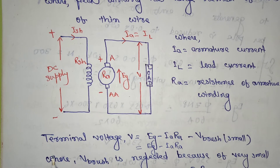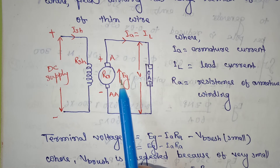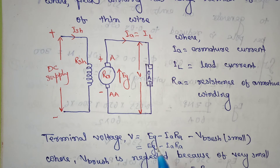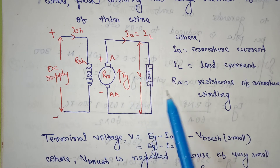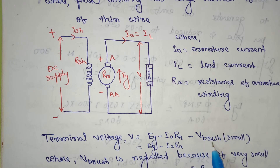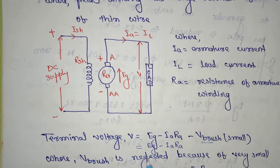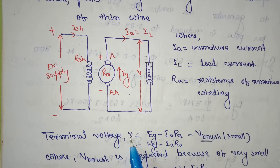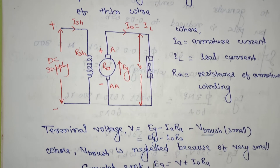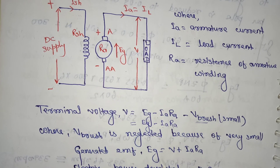Now let us see the derivation part for the separately excited DC generator. First we have to find the terminal voltage V. The terminal voltage is: V = Eg minus (Ia × Ra) minus V_brush. In a DC generator, brushes are used but the brush voltage drop is very small and can be neglected. So we can write: V = Eg − Ia × Ra.